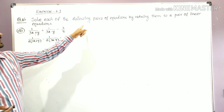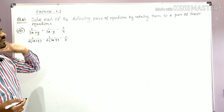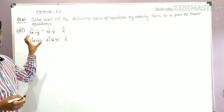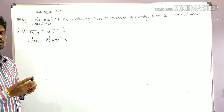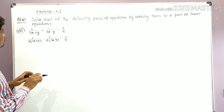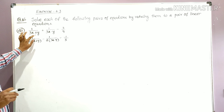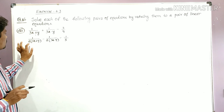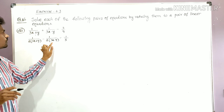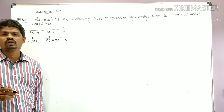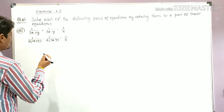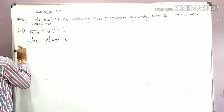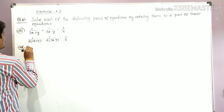Solve each of the following pairs of equations by reducing them to a pair of linear equations. This is the 8th problem — the last one in this set. In the exam, this carries four marks. The equations are: 1 divided by (3x + y) plus 1 divided by (3x − y) equals 3/4, and 1 divided by [2(3x + y)] minus 1 divided by [2(3x − y)] equals −1/8.